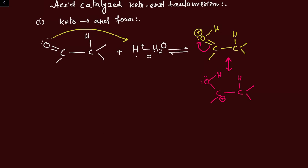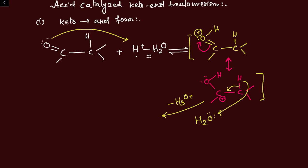Because of the resonance, the positive charge shifts onto the adjacent carbon. This condition resembles hyperconjugation — the carbon next to the positively charged carbon has hyperconjugable alpha hydrogens, and the C–H electron cloud shifts toward that carbon. From this resonating structure, water is present in the medium with two lone pairs of electrons, so the hydrogen comes out as H+ and is removed as H3O+. After this shift, we get an alkene with an –OH group, which is the enol form.